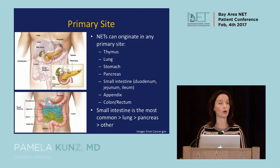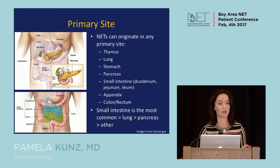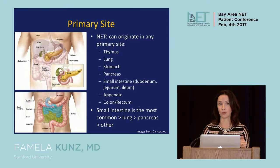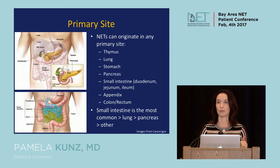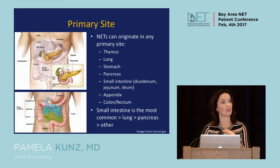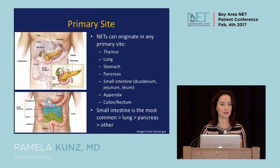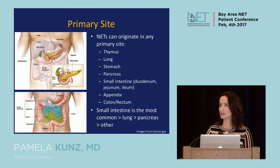NETs can originate in almost any part of the body. I've listed a few of the common ones: lung, thymus — an organ that sits up in the chest above the lungs — the stomach, pancreas, and small intestine.